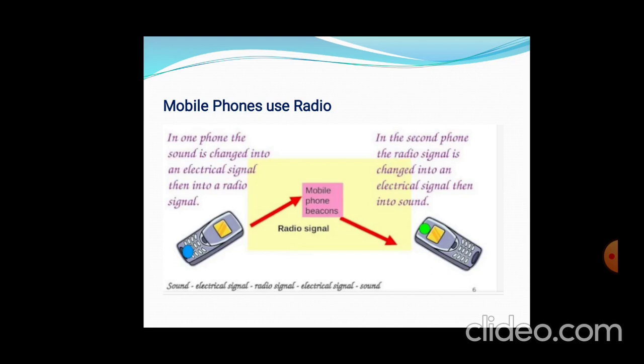In the second phone, the radio signal is changed into an electrical signal and then into sound. So when communicating from one mobile to another, the full chain is: sound → electrical signal → radio signal → electrical signal → sound.